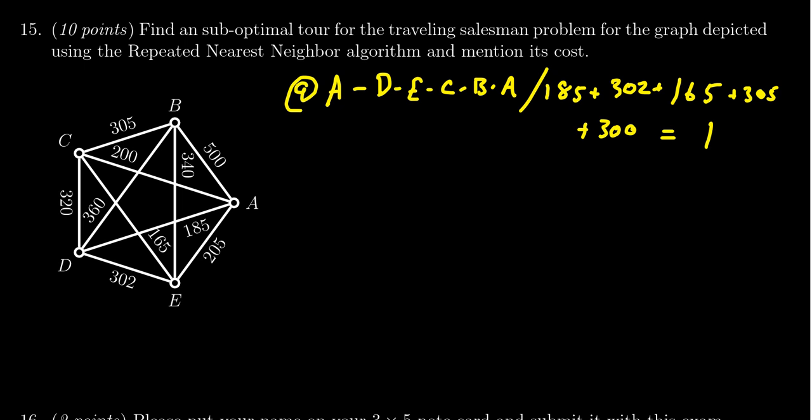Starting at B, we have 305, 360, 340, 500, so 305 is the best option. At C, the cheapest option is 165. At E, the cheapest option is 205. At A, we can't go back to C yet, but 185 is cheaper anyway, so we go to D, and then back to B. Our circuit looks like B to C to E to A to D